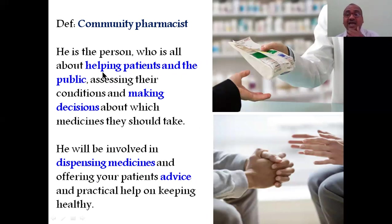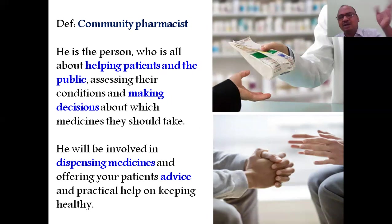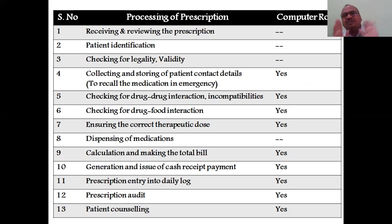The community pharmacist is a person who is all about helping patients and the public, helping them make decisions about which medications to take. The first job is dispensing the medicines, and the second job is giving advice. This is the processing of the prescription in the community pharmacy: how to receive the prescription, how to make a bill, how to check drug-drug interactions, how to dispense medication, and how to advise the patient.